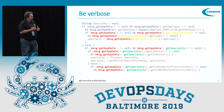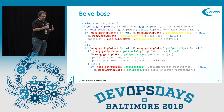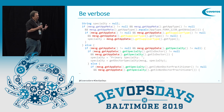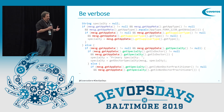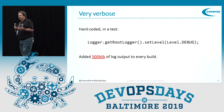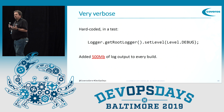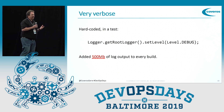Sometimes it's not just wrong code. Sometimes we're just really, really verbose. Like rather than using variables, we call methods over and over and over throughout, making it really hard to read. Other times we're extremely verbose — this particular problem we found because tests started failing because we ran out of disk space, because they were hard-coding debug statements and generating half a gig of logs on every build.